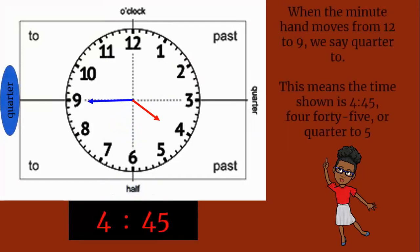When the minute hand moves from 12 to 9, we say quarter to. This means the time shown is quarter to 5.